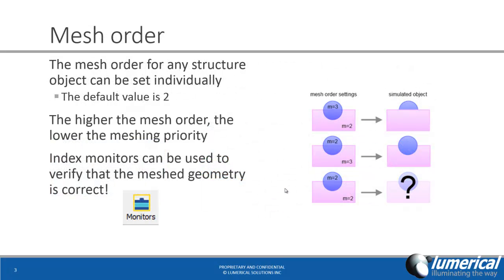So the mesh order is what we use to define the meshing priority, and this can be set for any structure object individually. The higher the mesh order, the lower the meshing priority. And if you look at the right side, if the circle here has mesh order 3 and the substrate has mesh order 2, then in the actual simulation, the overlap region is going to be covered by the substrate.